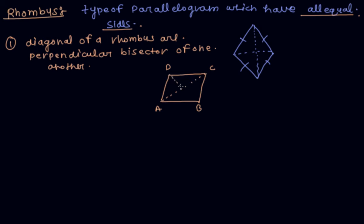Draw two diagonals AC and BD. Because rhombus is a parallelogram, both diagonals bisect each other. So I can say OA is equal to OC, and OB is equal to OD.